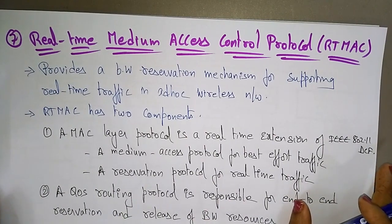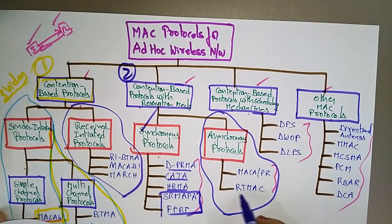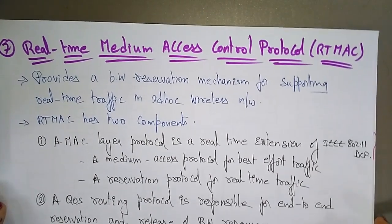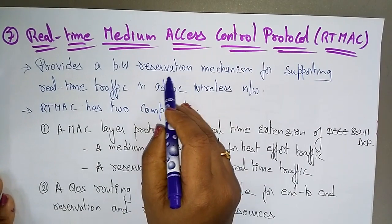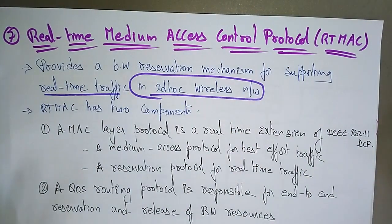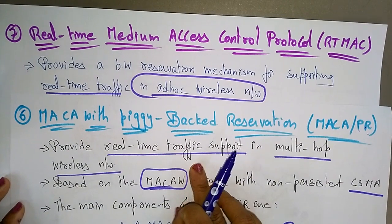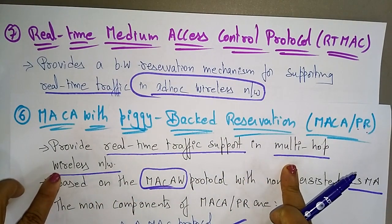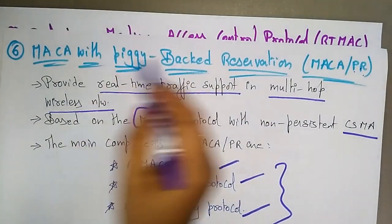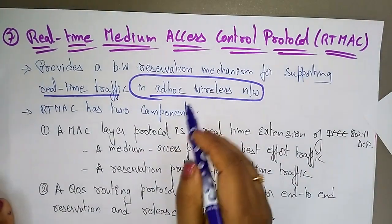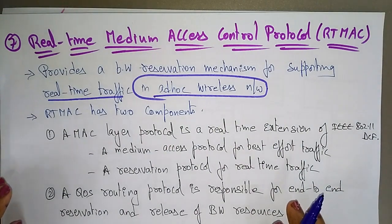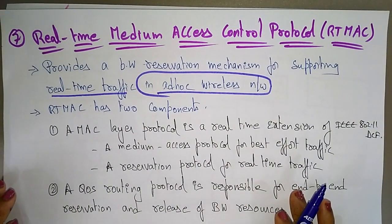Now let's see the next one — RTMAC, the real-time medium access protocol. This real-time medium access control protocol provides a bandwidth reservation mechanism for supporting real-time traffic in ad hoc wireless networks. Note that MACA-PR supports multi-hop wireless networks, whereas RTMAC supports ad hoc wireless networks. So if you are using ad hoc wireless networks, prefer RTMAC.